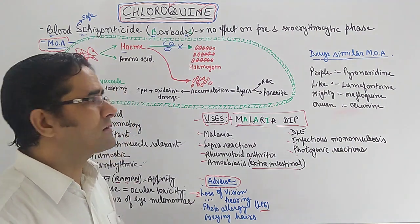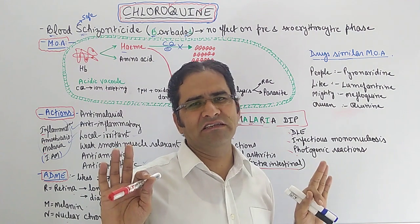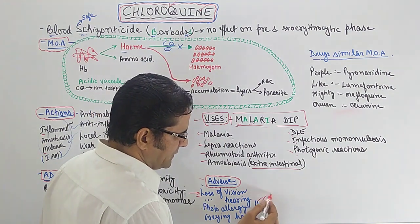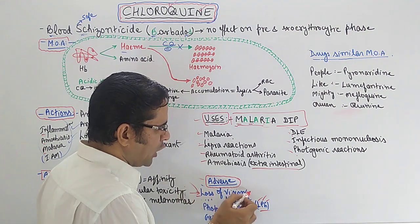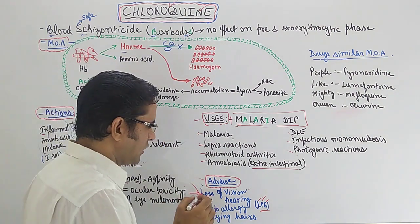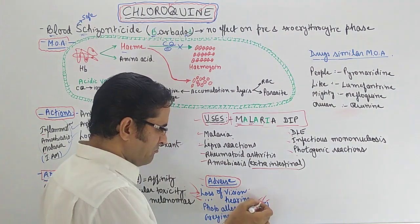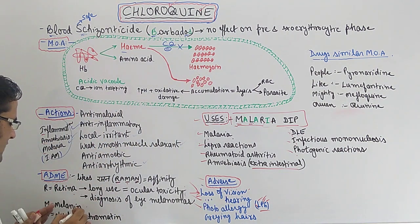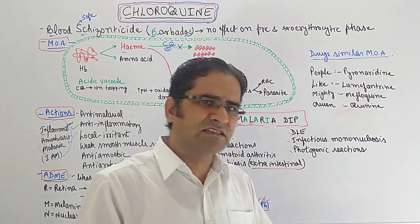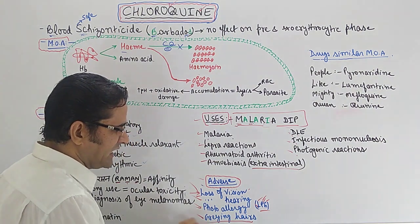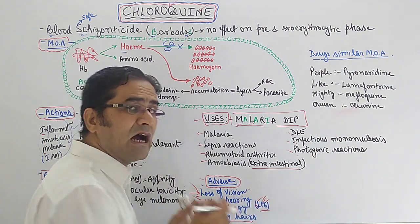For adverse effects, remember the mnemonic 'LPG.' L stands for loss of vision — because chloroquine deposits in the retina — and also loss of hearing. P stands for photo allergy — because chloroquine also deposits in the skin due to its affinity for melanin, and when sun rays are present, skin allergy can occur. G stands for graying of hairs. These are the key adverse effects.